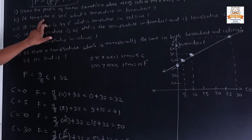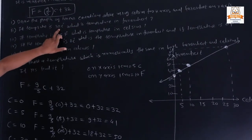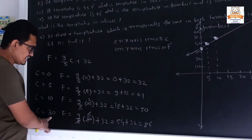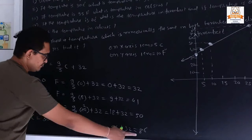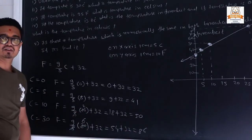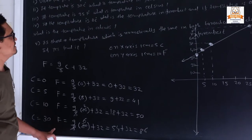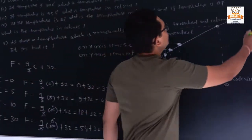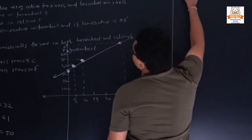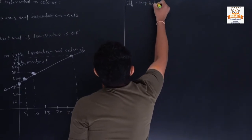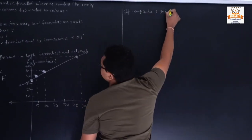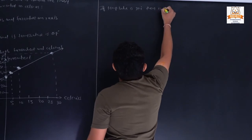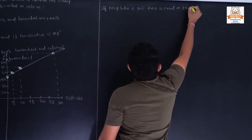Sub-question 2: If temperature is 30°C, what is the Fahrenheit equivalent? From our calculation: F = (9/5)×30 + 32 = 54 + 32 = 86°F. So at 30 degrees Celsius, the temperature is 86 degrees Fahrenheit.